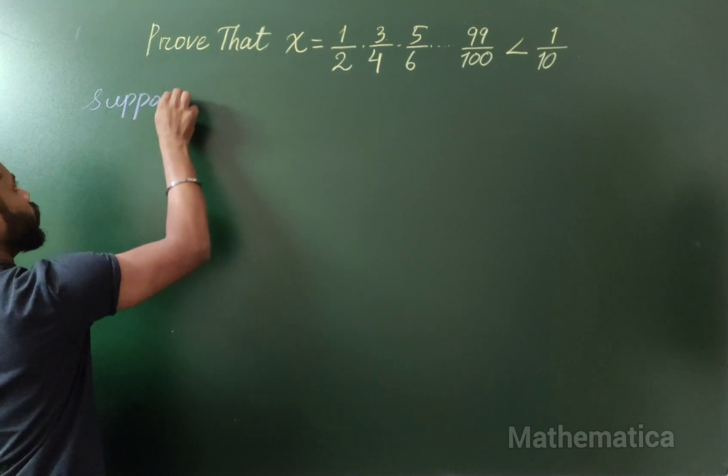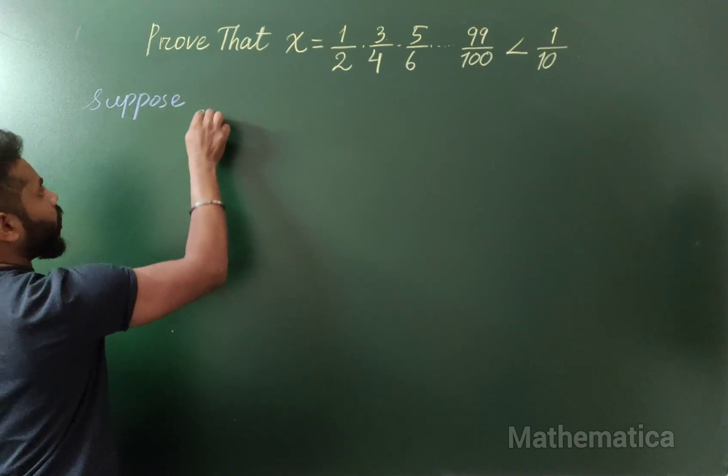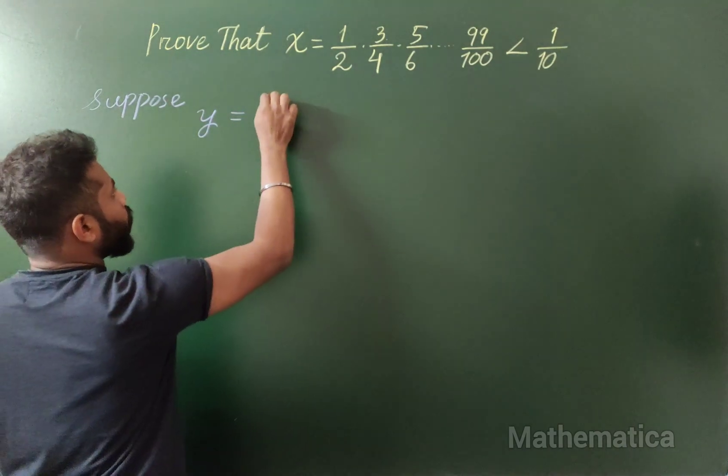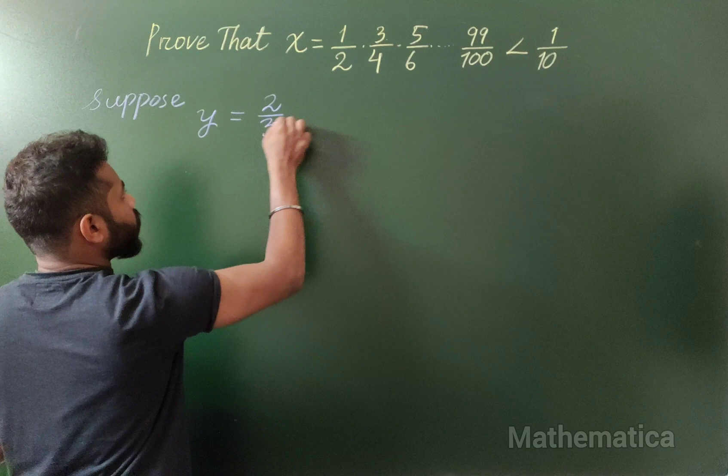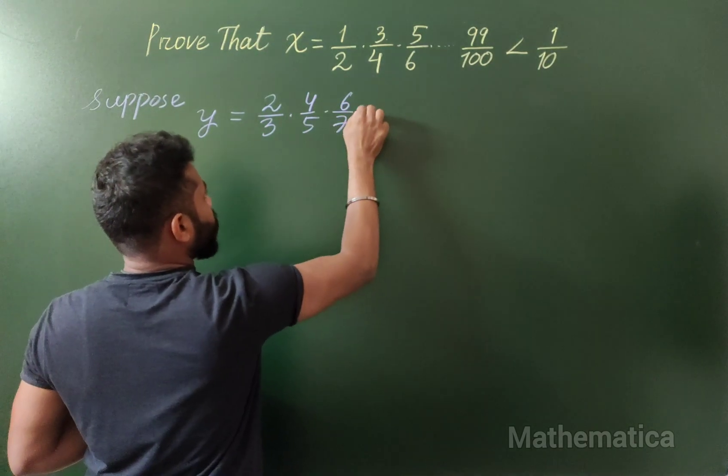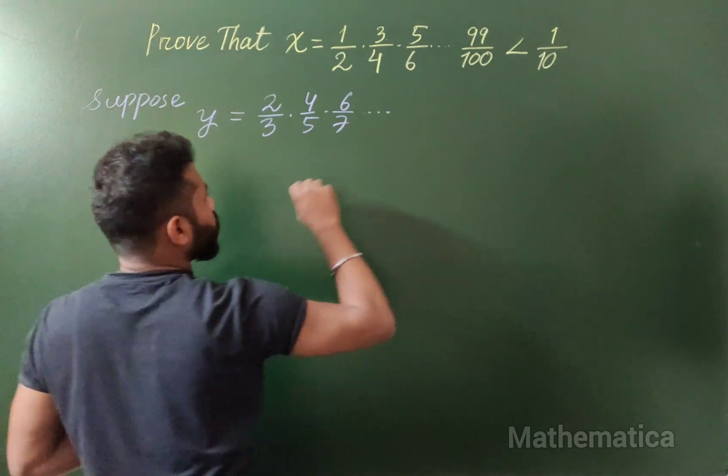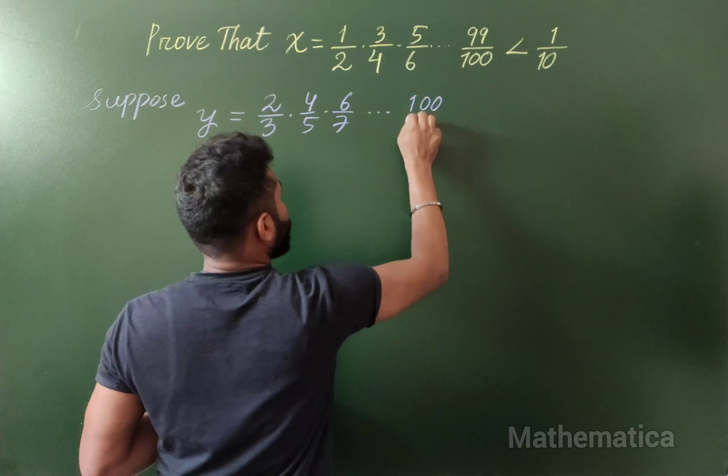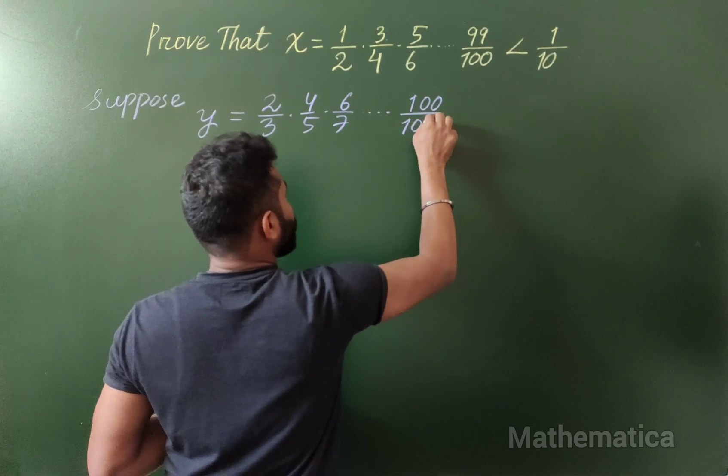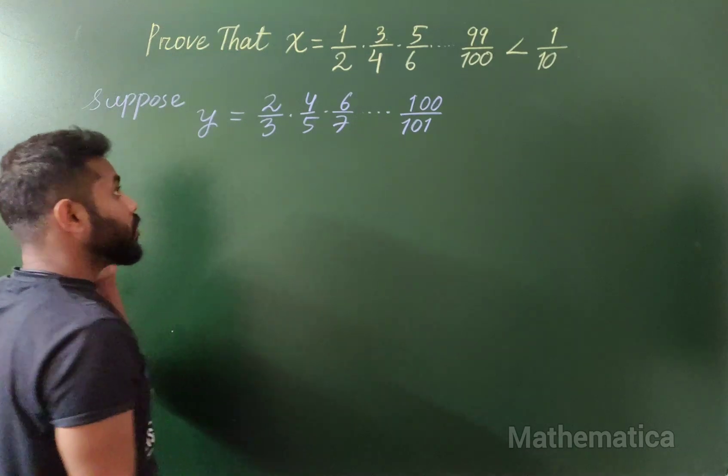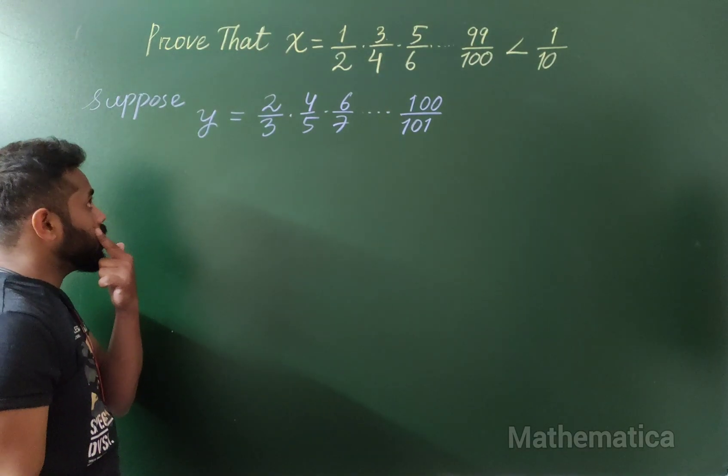Suppose we take a quantity y which is equal to 2/3 × 4/5 × 6/7, all the way up to 100/101. This is the other variable quantity I have assumed.